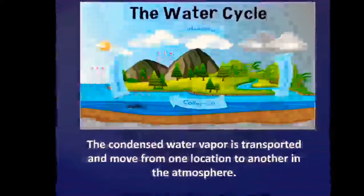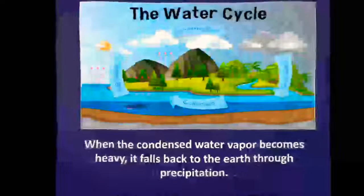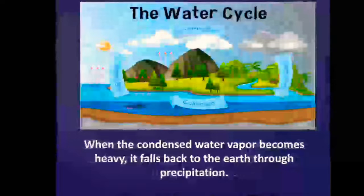The condensed water vapor is transported and moved from one location to another in the atmosphere. When the condensed water vapor becomes heavy, it falls back to the earth through precipitation.